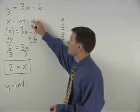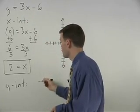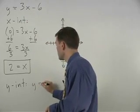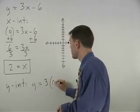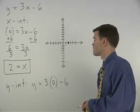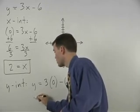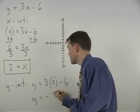we simply plug a 0 in for x back in the original equation and we have y equals 3 times 0 minus 6. So y equals 0 minus 6, or y equals negative 6.